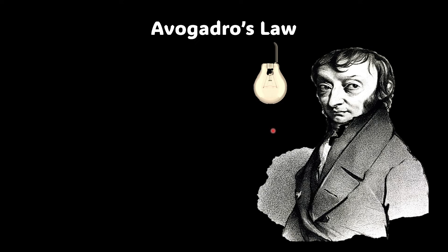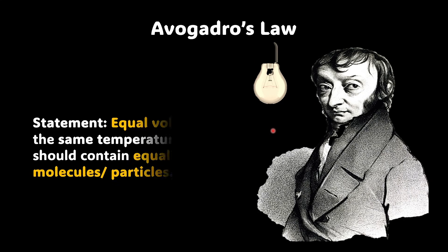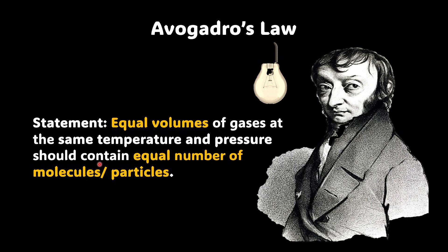It was in 1811 that Avogadro, an Italian physicist, stepped in with a revolutionary idea. He proposed equal volumes of gases at the same temperature and pressure should contain equal number of molecules or particles. At first glance, it sounds straightforward, isn't it?